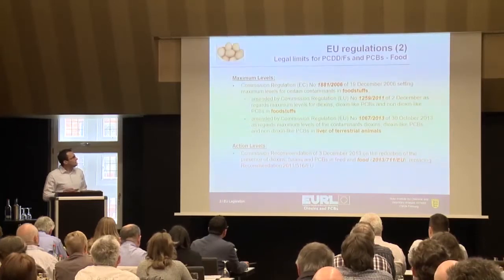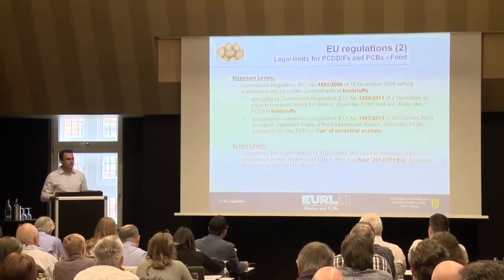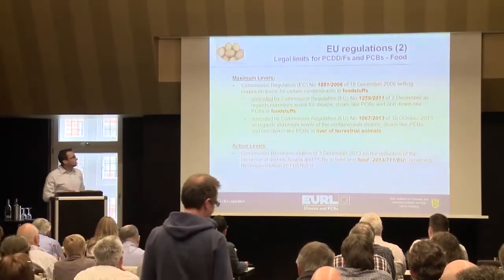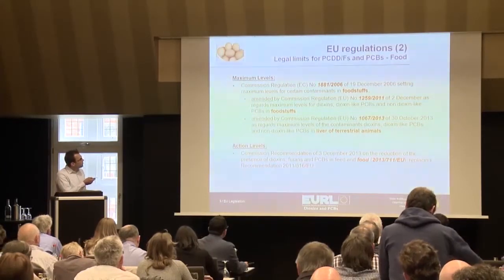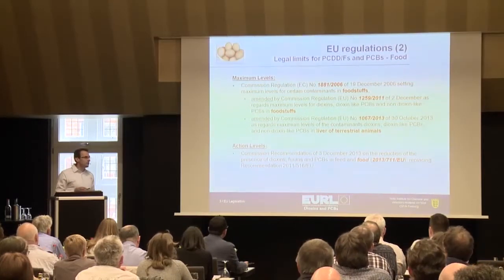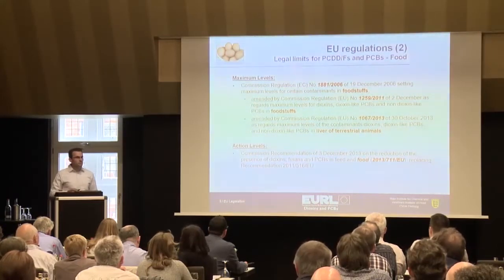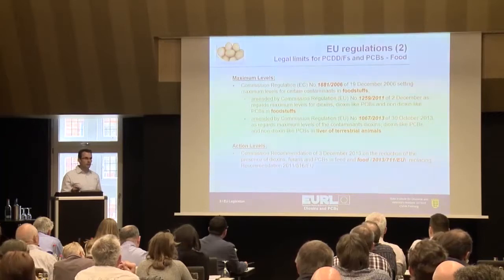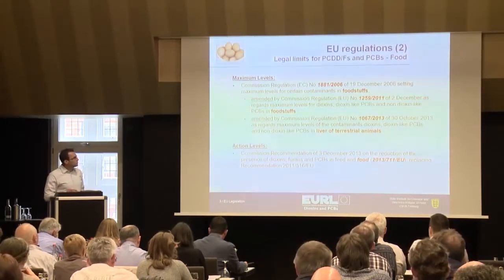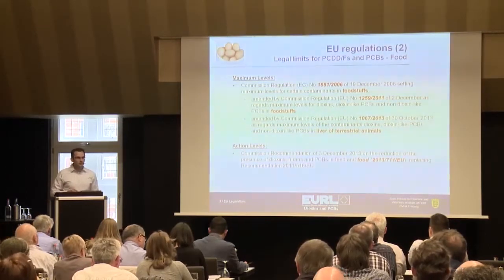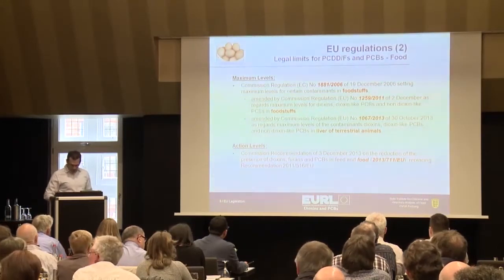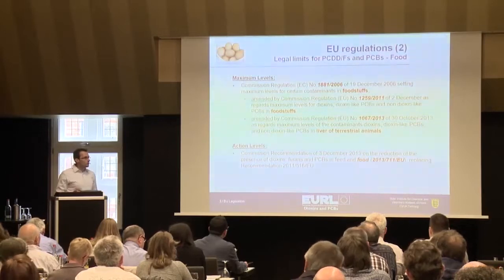Second part: the legal limits. Peter already gave an introduction on the maximum level, action level, and target level issue. For the maximum levels in food, we have regulation 1881 of 2006, which was amended twice. The first amendment in 2011 was due to the change from the WHO TEFs of 1998 to the TEFs of 2005, resulting in a decrease of maximum and action levels — but only due to the new calculations, just an adjustment for the new TEFs. The last amendment in 2013 set new maximum levels for liver of terrestrial animals, following the discovery of high levels of dioxin and PCBs in sheep liver throughout Europe.